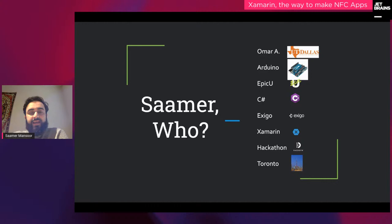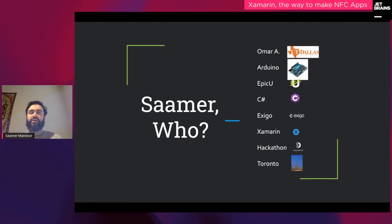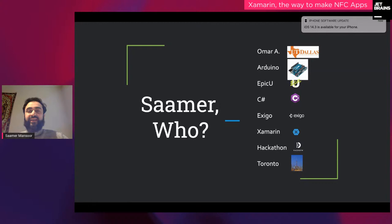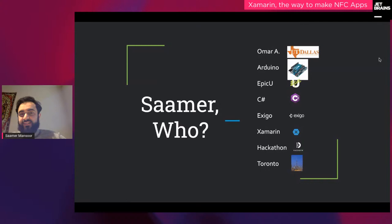So, who am I? I'm Samer Mansoor. I graduated from the University of Texas at Dallas. What got me into mobile development? My friend Omar got me into tinkering with Arduino devices, iPhones, and Androids — installing custom bootloader ROMs on Android devices you buy for $100 and sell for $200. I got into a coding boot camp called Epic U in Dallas, where you study C#, HTML, CSS, and JavaScript. Based on my final project, a company offered me a position as a mobile developer, and that's where I started doing Xamarin in 2016.